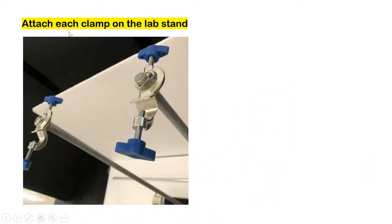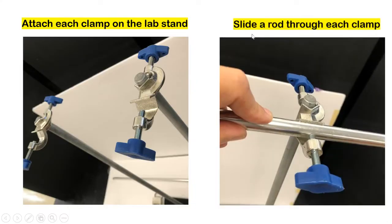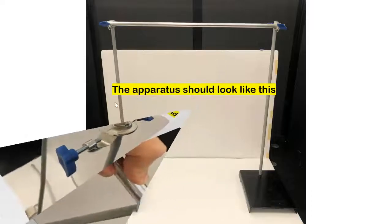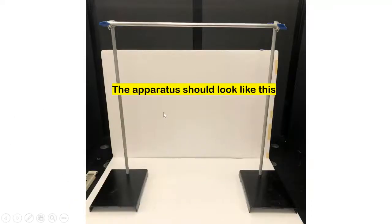Let's start by attaching each clamp to the lab stand. Slide the rod through each clamp. When you set up everything—the two lab stands, the clamps, and the rod—it should look like this.